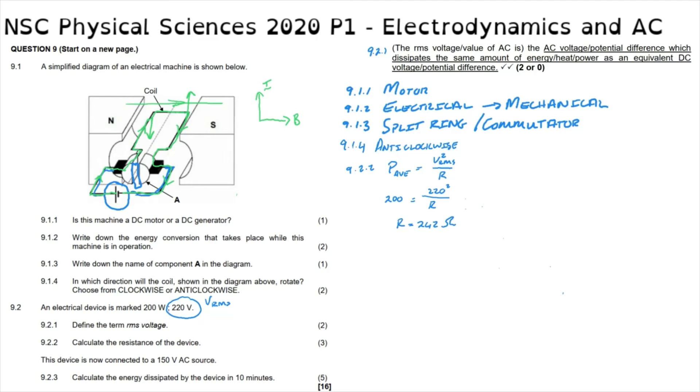This device is now connected to a 150 volt alternating current source. 9.2.3: Calculate the energy dissipated by the device in 10 minutes. Once again, we can do this in a number of ways, and you can see these options in the marking guidelines. The simplest option is to say that the work done or energy transferred is equal to the voltage squared multiplied by the time divided by the resistance of this device. Where the voltage is given to us as 150, that value is squared. Time must always be given in seconds and therefore we say it is 10 minutes multiplied by 60 seconds per minute. That is divided by the resistance that we calculated in the previous question, 242. That then tells us that the work done or energy transferred is 55,785.12 joules.